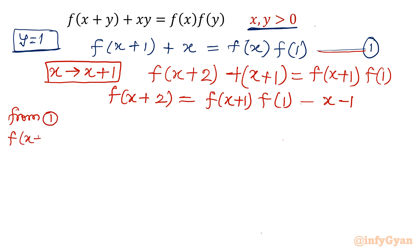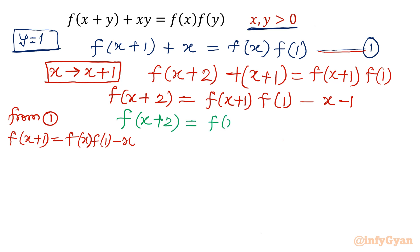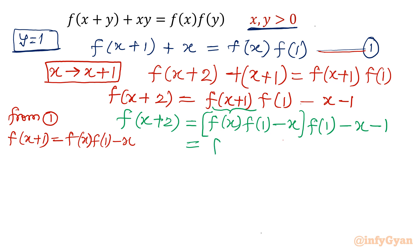From equation 1, f(x+1) = f(x)·f(1) − x. Substituting this value, our equation becomes f(x+2) = [f(x)·f(1) − x]·f(1) − (x+1), which expands to f(x+2) = f(x)·f(1)² − x·f(1) − (x+1). This is our equation number 2.